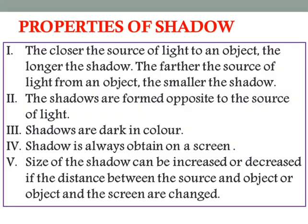Let us see the different properties of shadow. The first property: the closer the source of light to an object, the longer the shadow; the farther the source of light from an object, the shorter the shadow. The second property: shadows are formed opposite to the source of light. The third property: shadows are dark in color. The fourth property: shadow is always obtained on a screen. The fifth property: the size of the shadow can be increased or decreased if the distance between the source and object, or object and screen, are changed.